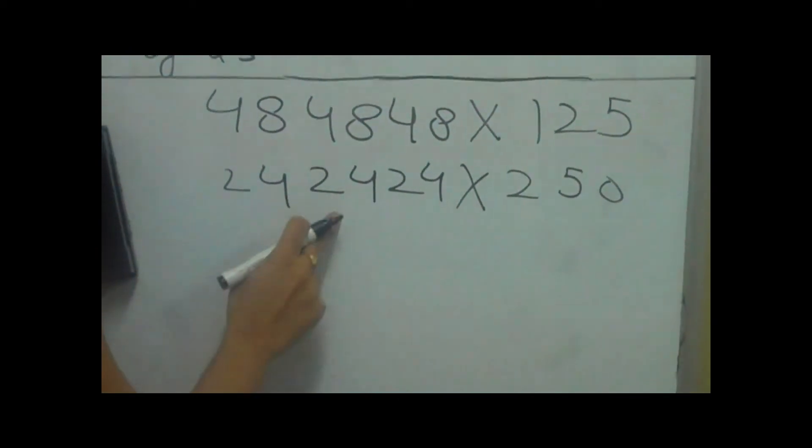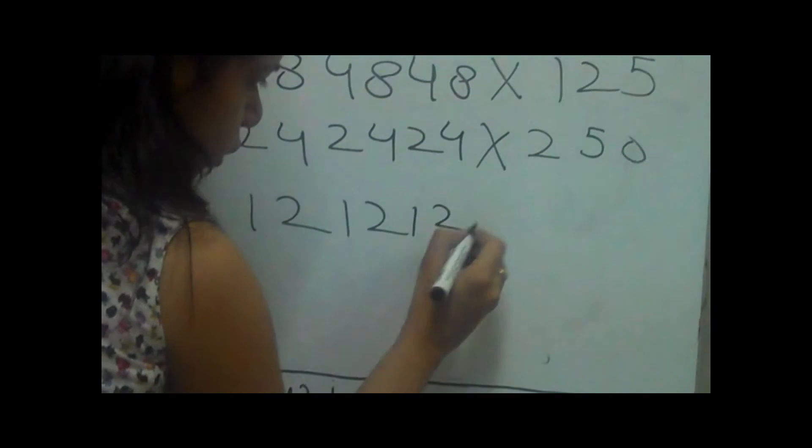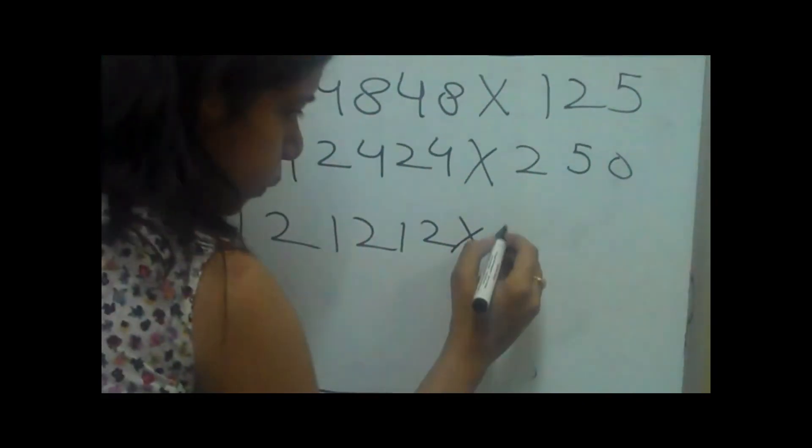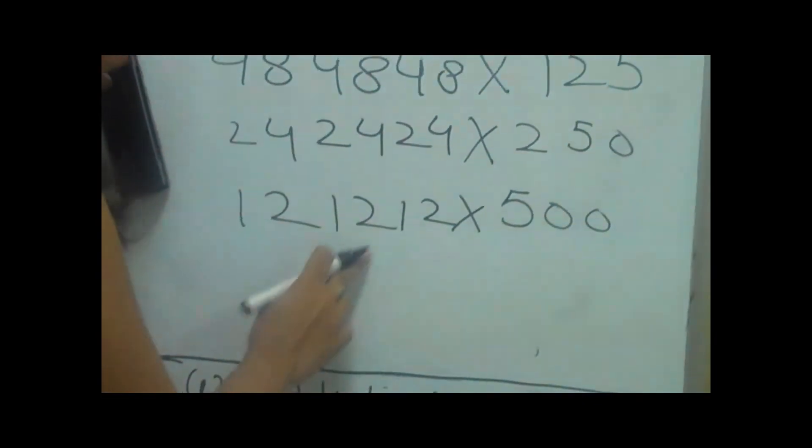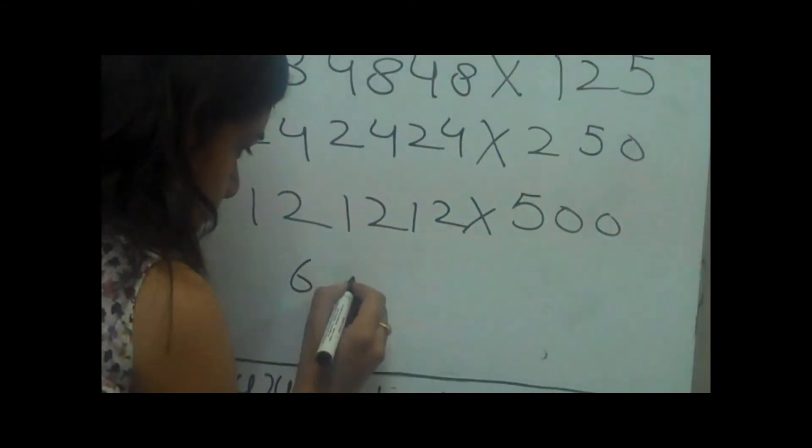Now again divide this number by 2, which makes 12. And multiplying it by 2 makes 500. Now again dividing this number by 2 makes 6.